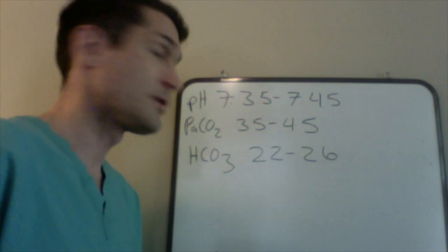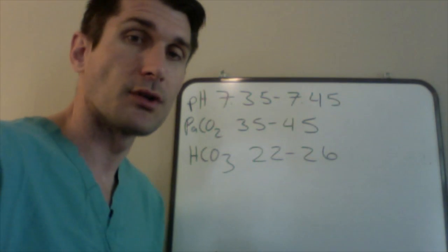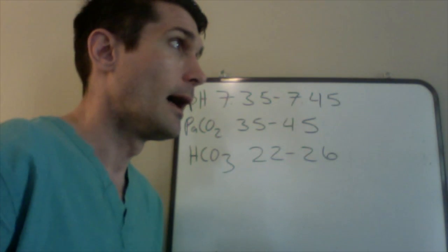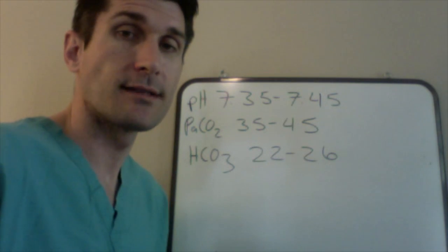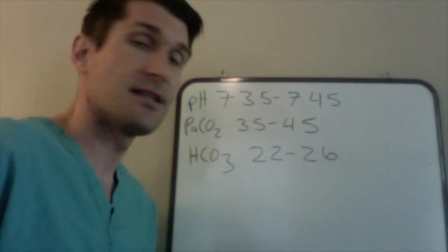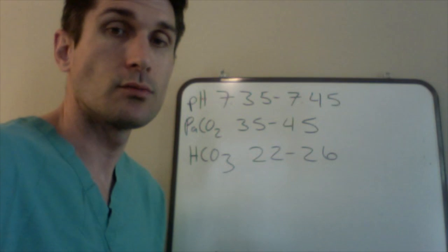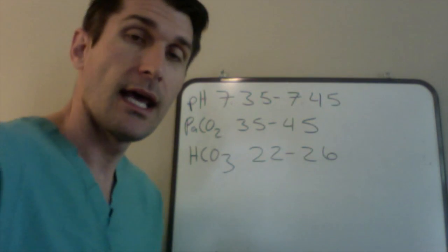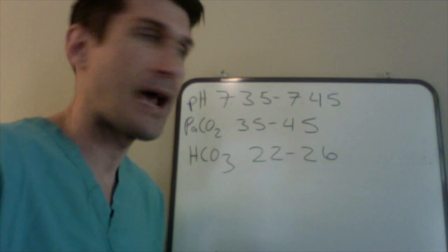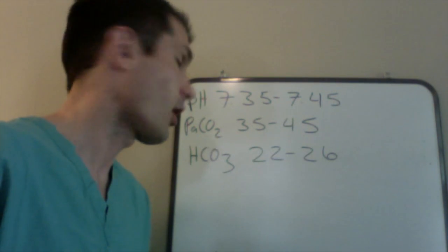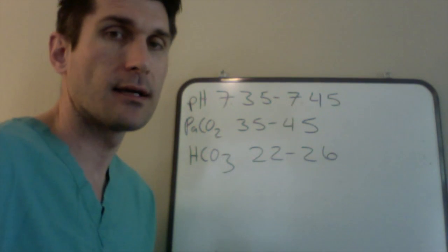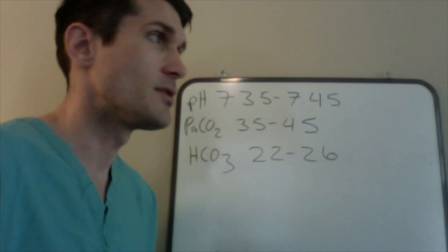So your two variables here are PaCO2, partial arterial pressure of CO2 carbon dioxide in the blood, and bicarbonate HCO3. PaCO2 is the acidic content of the blood which counterbalances the bicarbonate which is the basic or alkalotic portion of the blood.